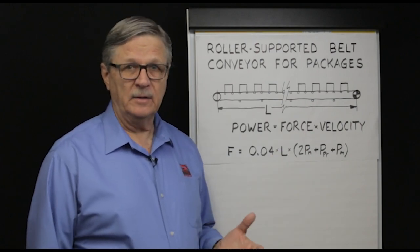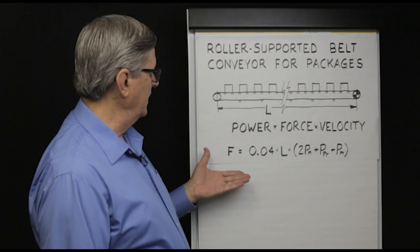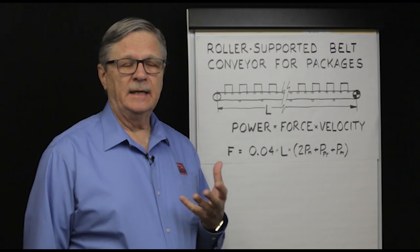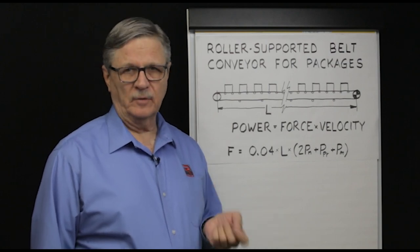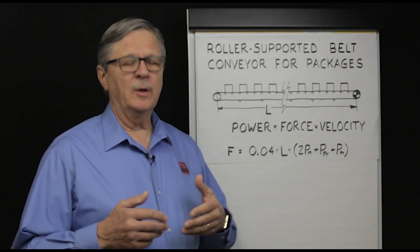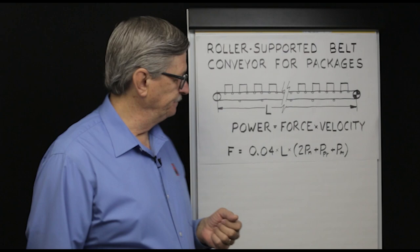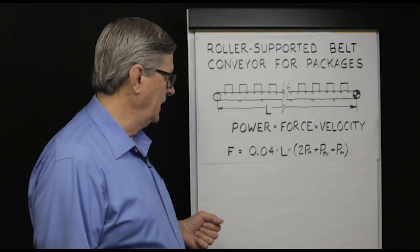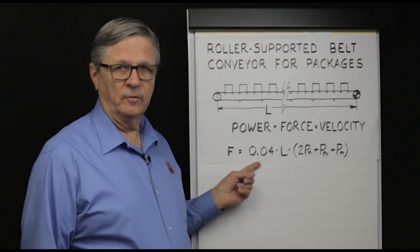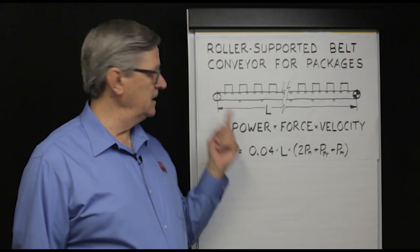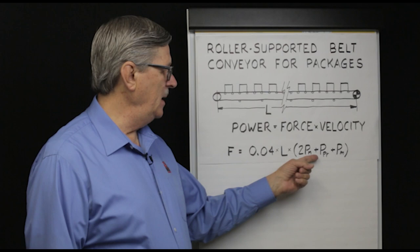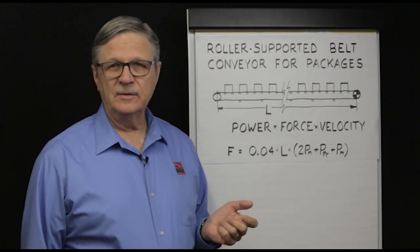The equation which Romeka uses to calculate required belt pull on a roller-supported belt conveyor for packages applies when the brand of roller and belt have not yet been selected and the conveyor is more or less average — neither particularly big nor particularly small. The simplifying assumptions are: 0.04 for roller bearing friction, L for conveyor length, and three terms: PN, PPR, and PM. Let's define those terms.